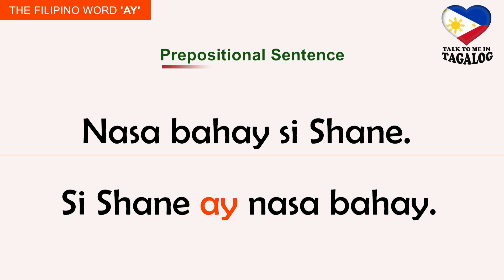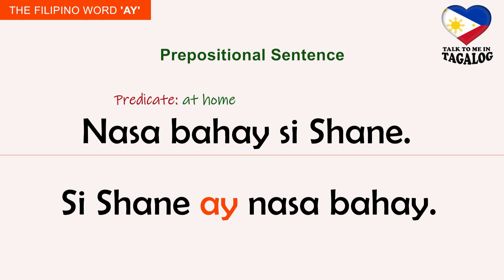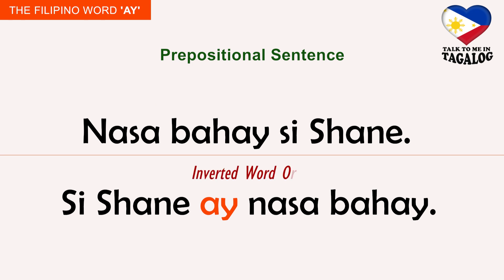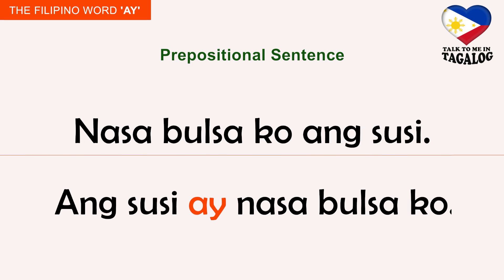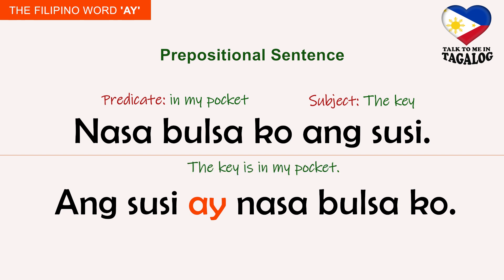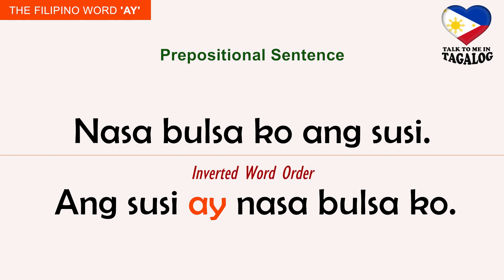Let's now look at prepositional sentences where Tagalog prepositions like 'sa' and 'nasa', which usually indicate location or direction, are in the predicate position. 'Nasa bahay si Shane' means Shane is at home. Inverted order: 'Si Shane ay nasa bahay'. 'Nasa bulsa ko ang susi' means the key is in my pocket. Inverted order: 'Ang susi ay nasa bulsa ko'.